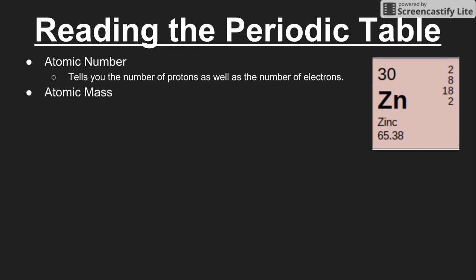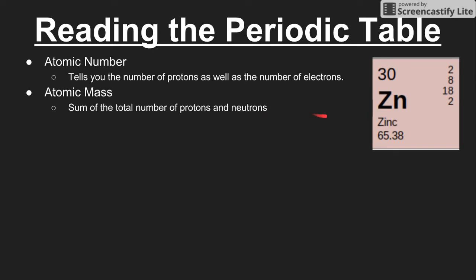The next thing to talk about is the atomic mass. The number with a decimal point below the element symbol is the atomic mass. The atomic mass tells us the sum of the total number of protons and neutrons. So in the case of zinc, there would be a sum of 65 protons and neutrons.